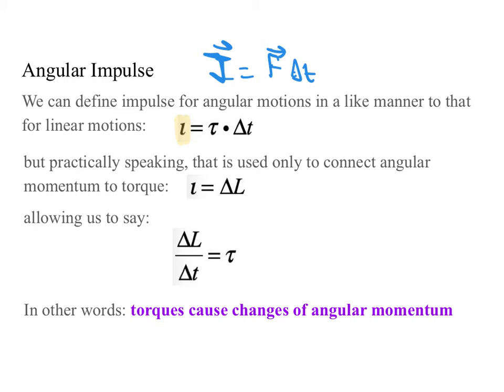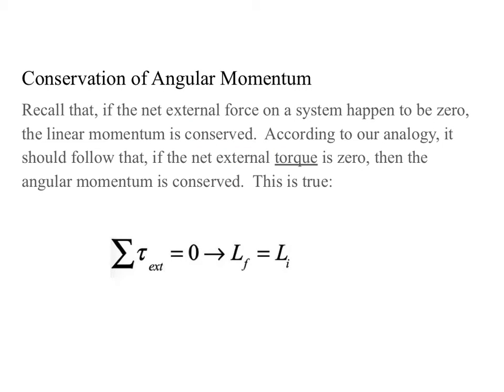That allows us to say that dL/dt is tau. In other words, torques cause changes in angular momentum — the rate at which angular momentum changes is the torque. Recall that if the net external force on a system happens to be zero, the linear momentum is conserved. According to our analogy, it should follow that if the net external torque is zero, then the angular momentum is conserved. And this is true: if the sum of the external torques is zero, then L final equals L initial.